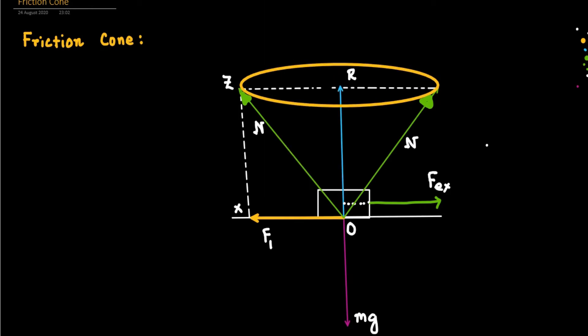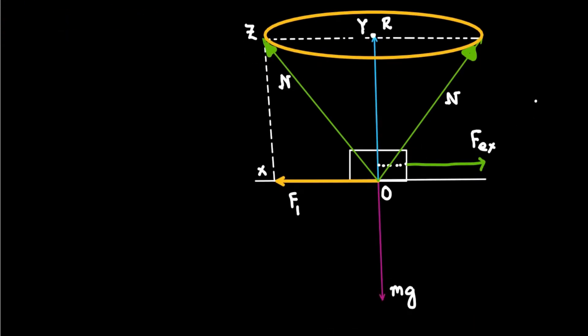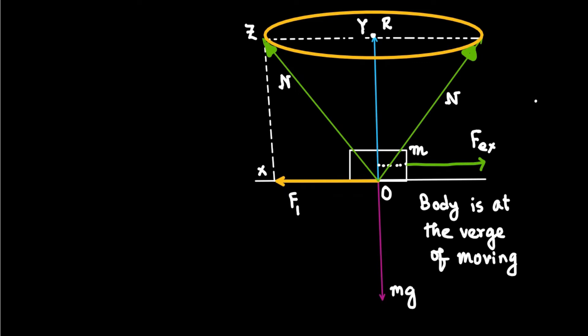R — the normal reaction — is also the height of the cone, meaning R equals OY. We now have the friction cone. The body is at the verge of moving over the rough surface. The friction cone is an inverted right circular cone having radius equal to the limiting friction FL and height equal to the normal reaction R.